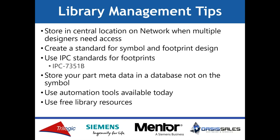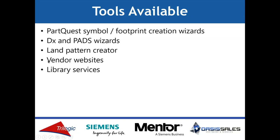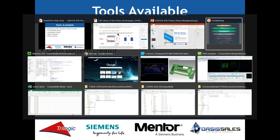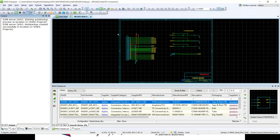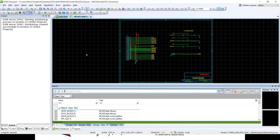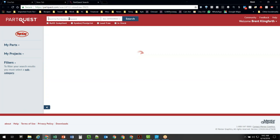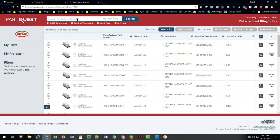Tools that are available today — at least if you're a Mentor customer — include PartQuest. It's a footprint creation wizard but also provides library content from different sources. I'm going to go to my schematic tool, PADS Designer, and go to the new search tab. I don't even need to bookmark the PartQuest page — I can just click on the PartQuest button here. This will take me to this free resource. If you are a Mentor customer, this is completely free to you; you just need a Mentor SupportNet account.